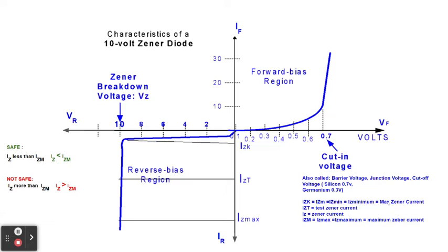There is a typographical error — this should be minimum Zener current, not maximum Zener current. IZmax, IZM, or IZ maximum all refer to the maximum Zener current. There is another typographical error — it's Zener current, not ZBER. The forward voltage, reverse voltage, forward current, and reverse current are labeled on the curve.